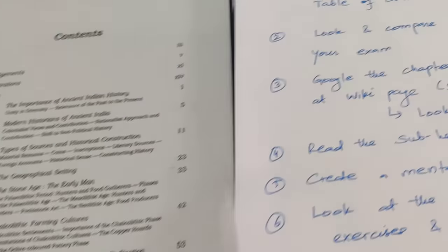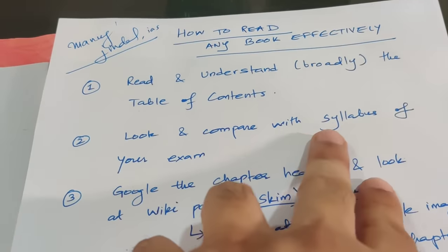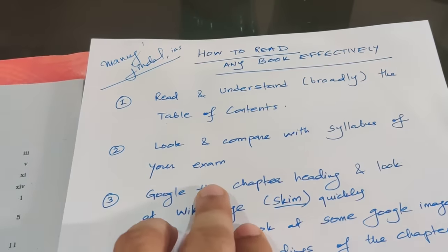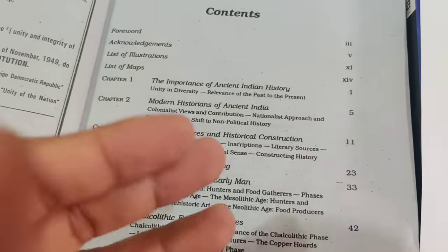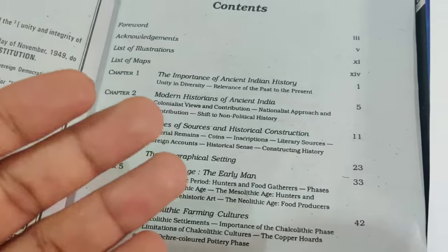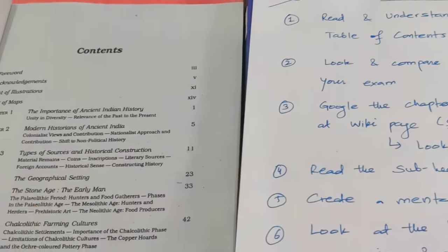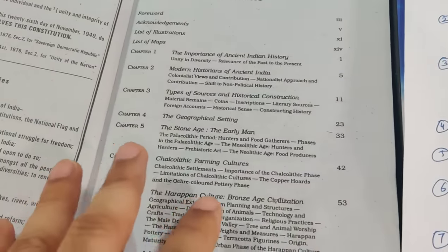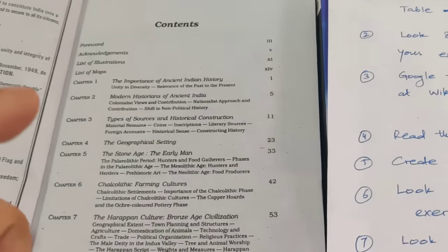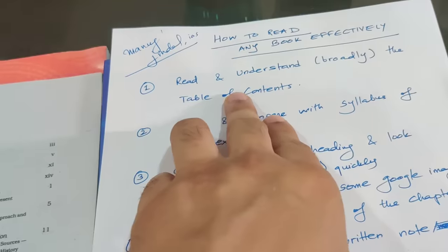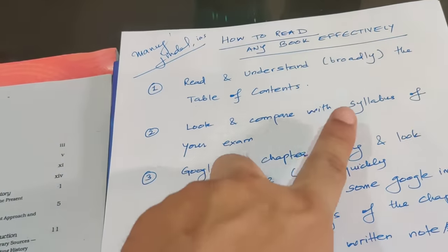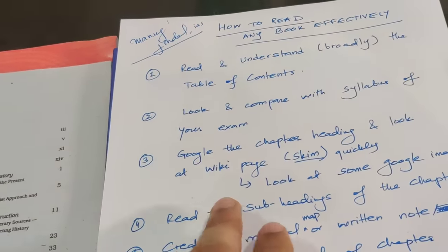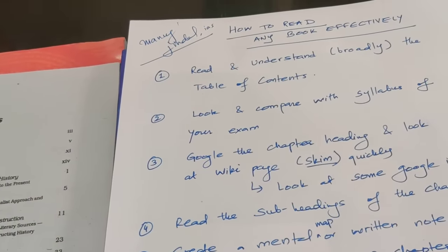Create a mind map or write these topics down in short form as you go through the table of contents. Apart from that, the second step is to compare the table of contents with the syllabus of your exam — whether it's a UPSC syllabus or any other. This side-by-side comparison gives you a better understanding, and when you remember these topics you'll be able to sort through exam questions and retain information better. If there's no syllabus, just try to imprint these topics in your mind consciously.